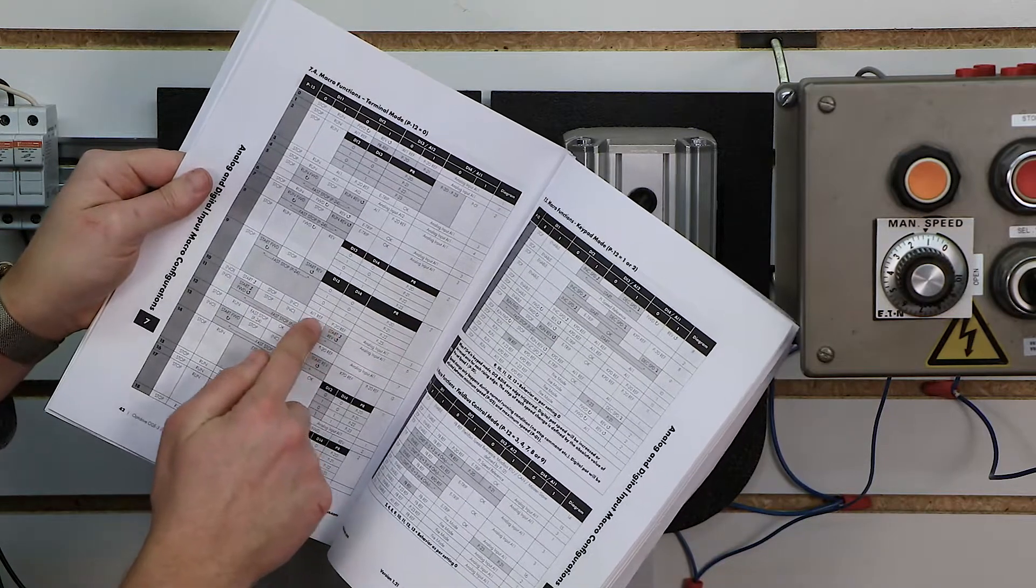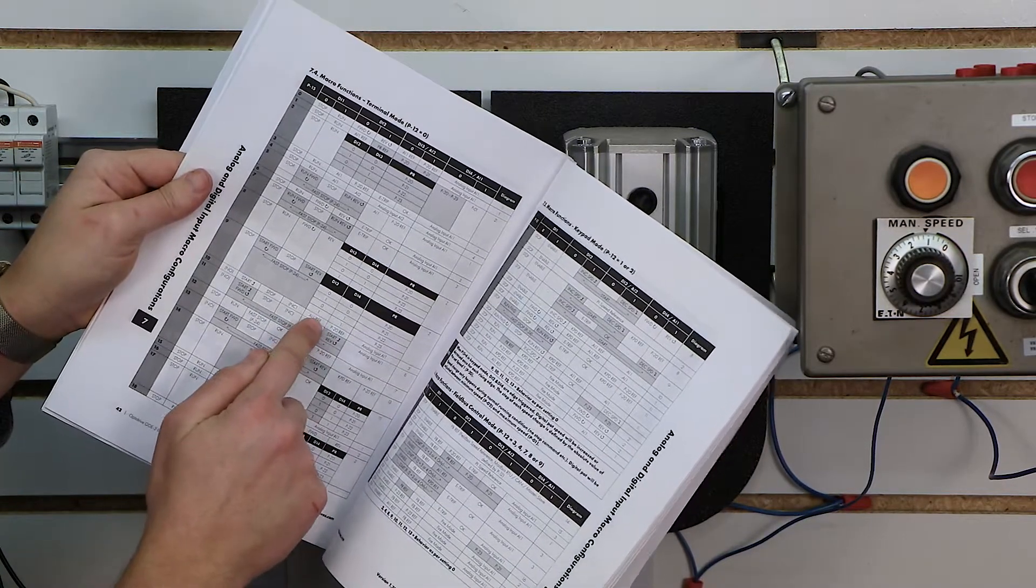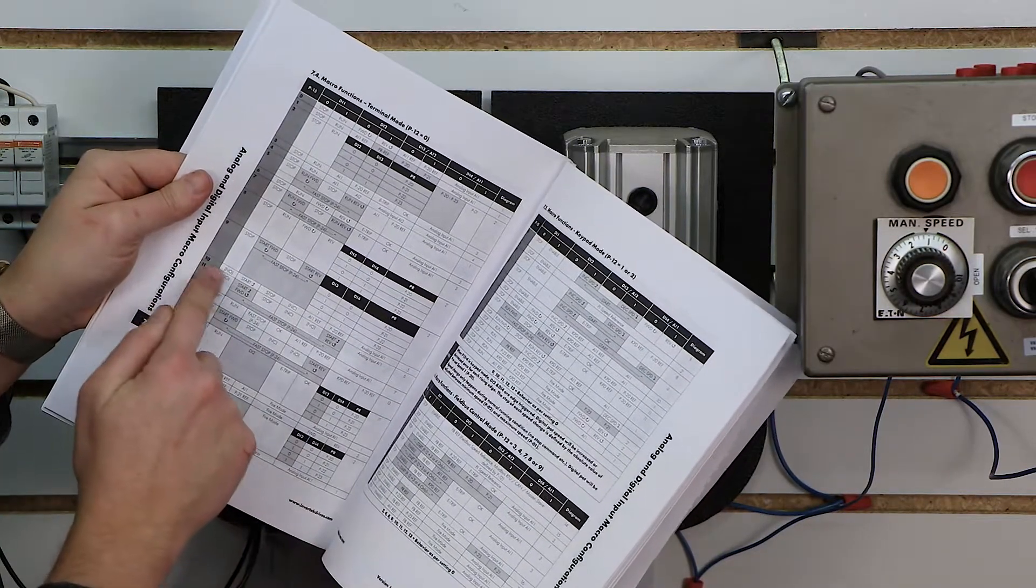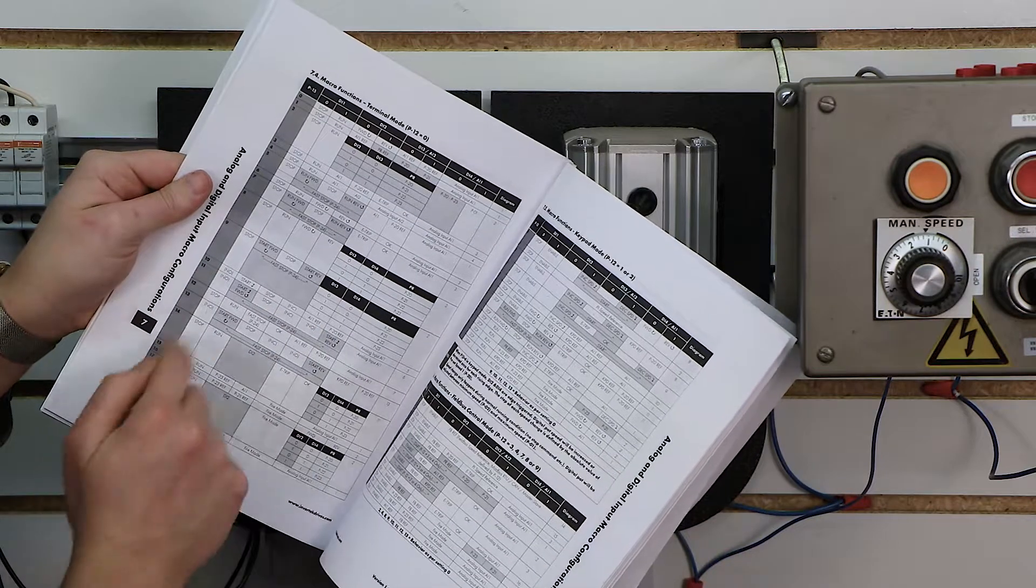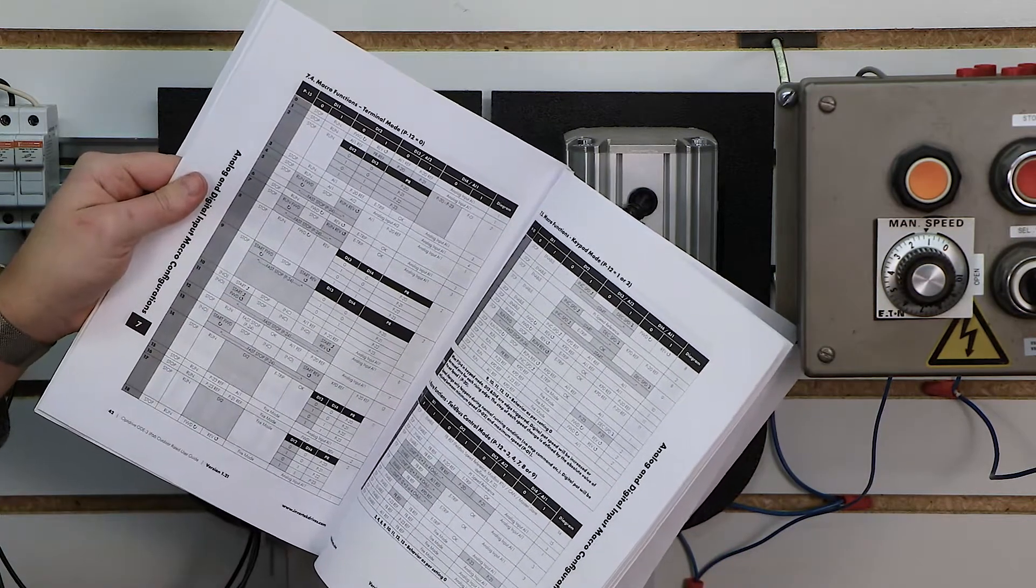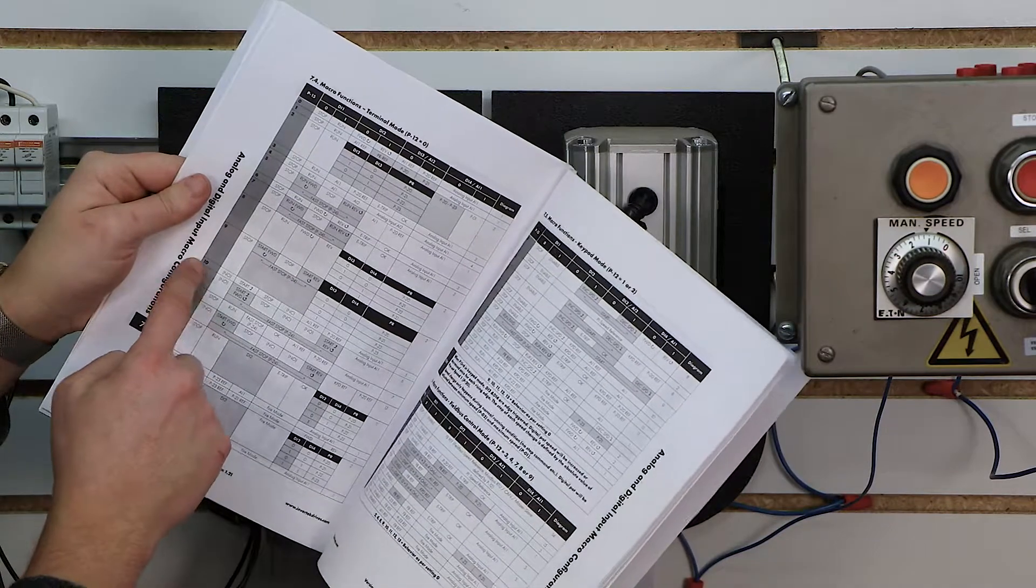So what we need to do is we need to either choose 10 or 11 for our start command. Now, since I'm going to be controlling my speed with analog input 1, this number 10 for 15 is what's going to work out for me. But you can take a look at both of those and find what best fits your application. But in ours, we're going to go ahead and use 10.